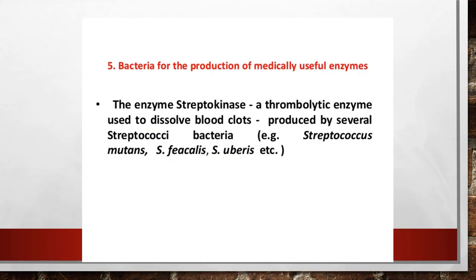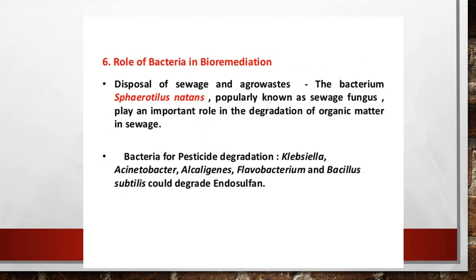Bacteria are also used for the production of medically useful enzymes. The enzyme streptokinase is a thrombolytic enzyme used to dissolve blood clots. Streptokinase is produced by Streptococcus bacteria — examples include Streptococcus mutans, Streptococcus faecalis, and Streptococcus uberis.